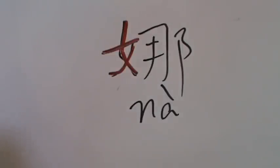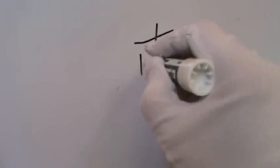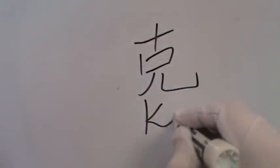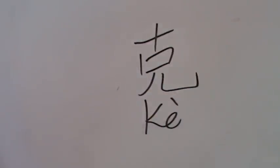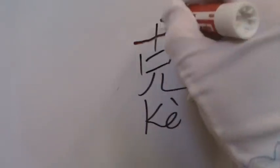Now, next page, page 31. Number five: 克 (Ke), written with 7 strokes. Ke is used in a man's name, but it also means to overcome. The radical is this top part here.